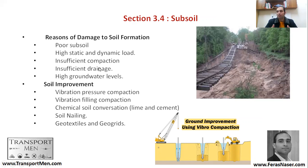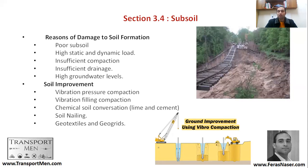What are the reasons for damage to soil formations? First, poor subsoil that was weak from the beginning; high static and dynamic loads from trains; insufficient compaction; insufficient drainage; or high groundwater levels. To improve the subsoil, you can do vibro-compaction, vibro-filling compaction — inserting stronger soil — or chemical soil treatment, soil nailing for slopes, and adding geotextiles and geogrids for additional stability.